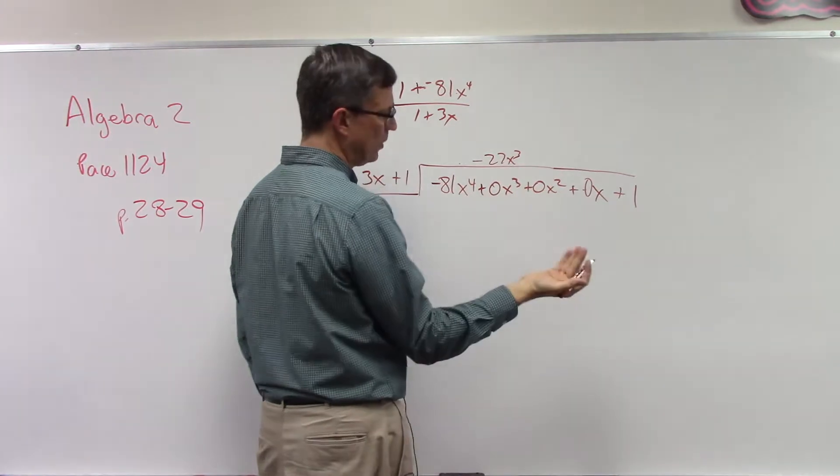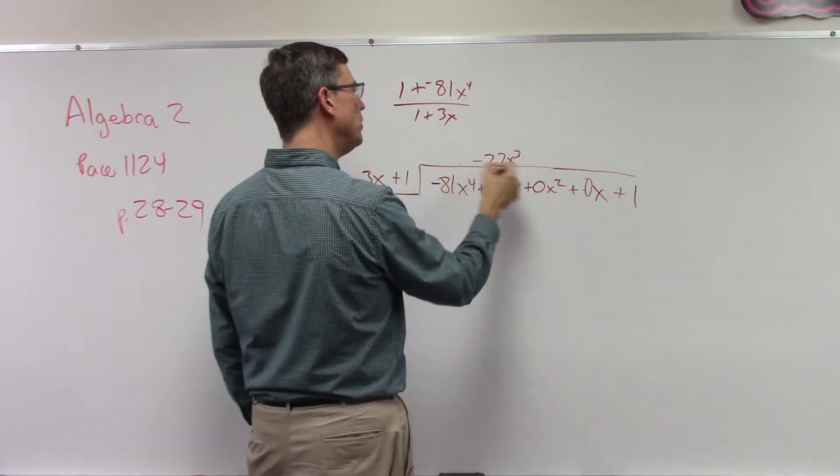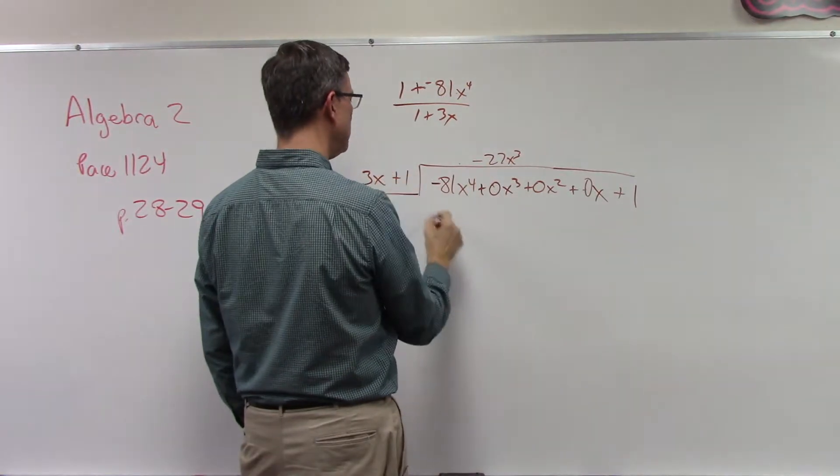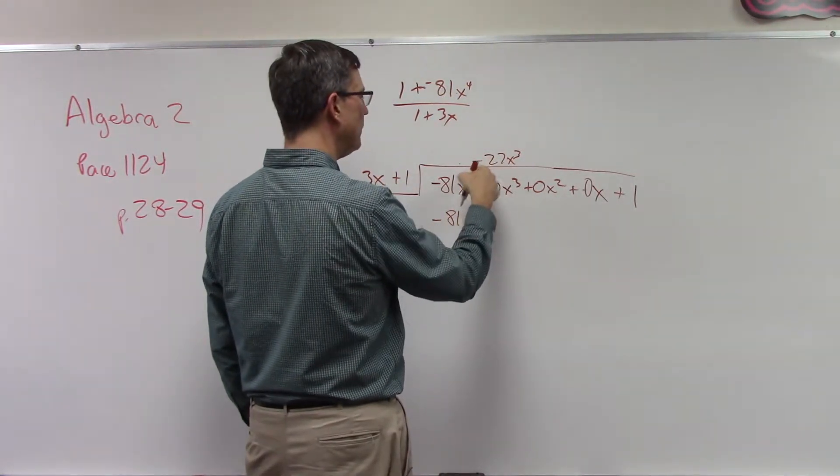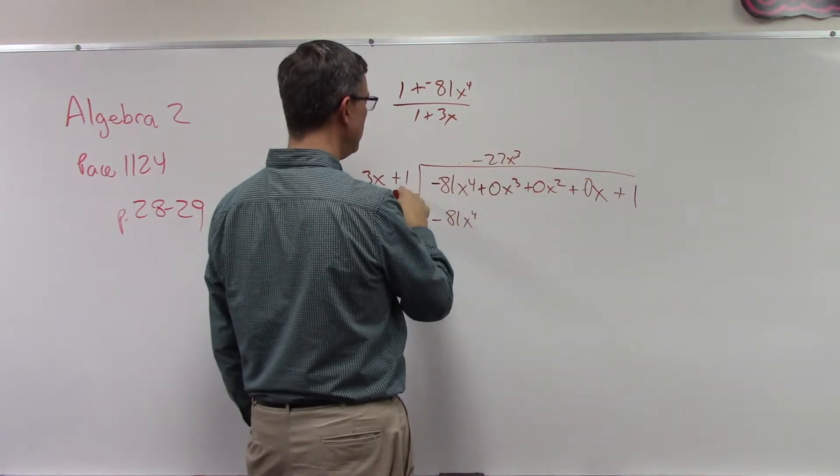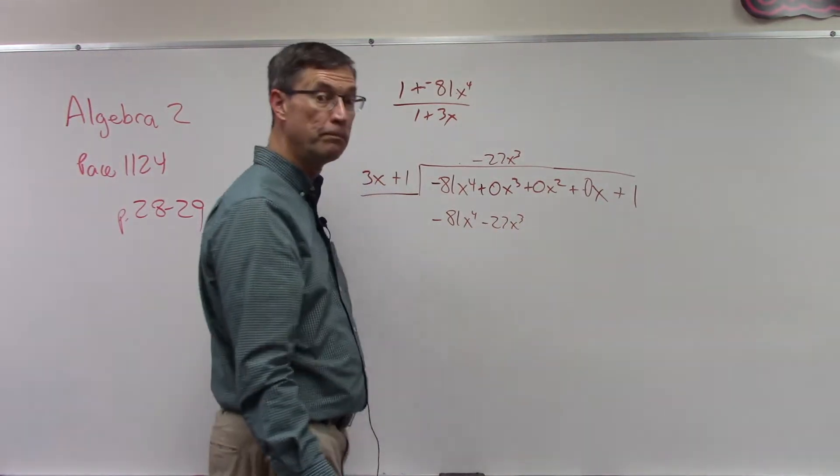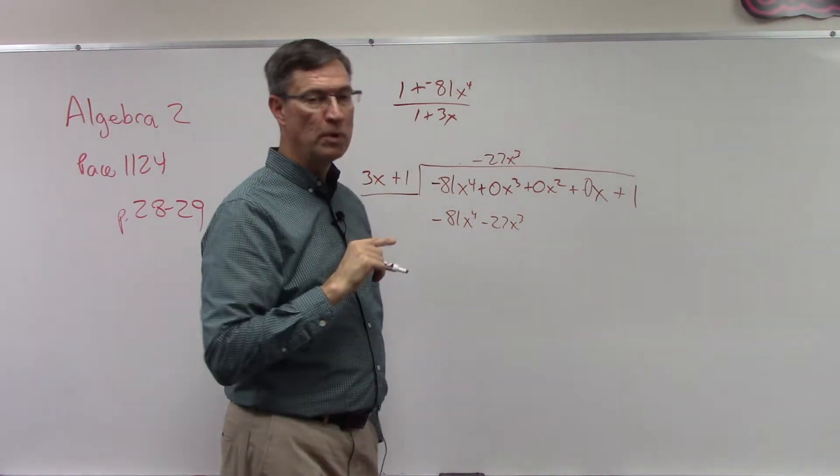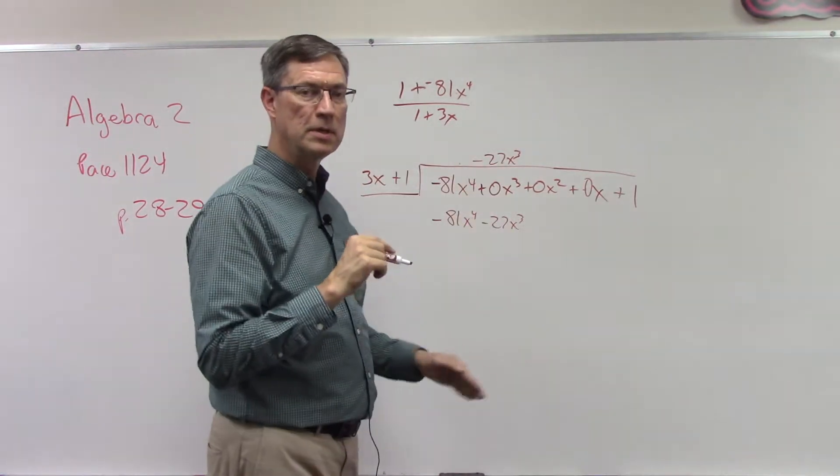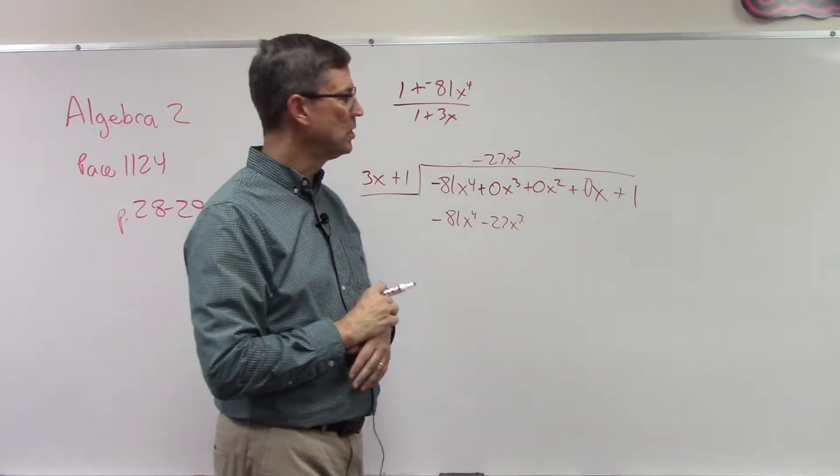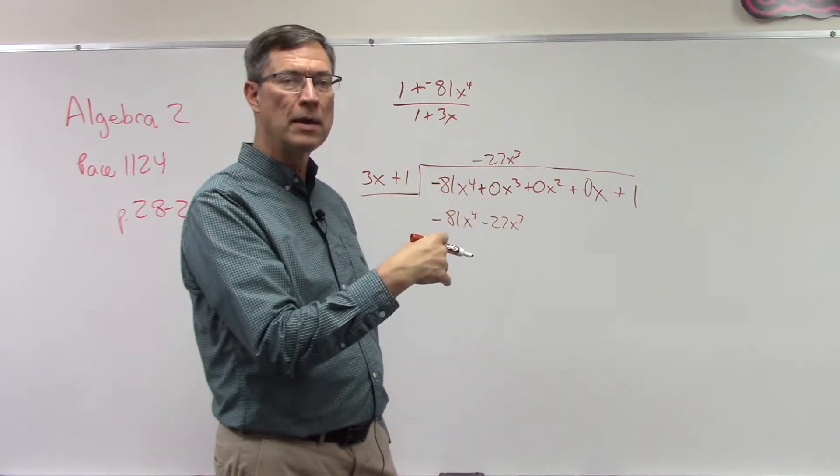Let me line it up over here, so negative 27x to the third, that way it's over the x to the third. Now we go back and we multiply this times this. I get negative 81x to the fourth. Negative 27x to the third times 1 is negative 27x to the third.